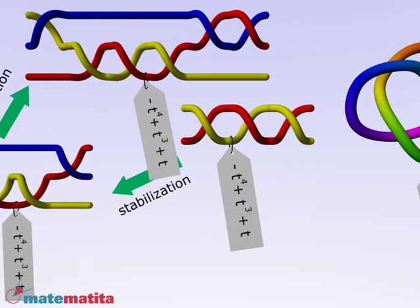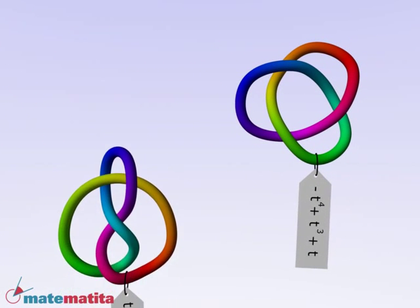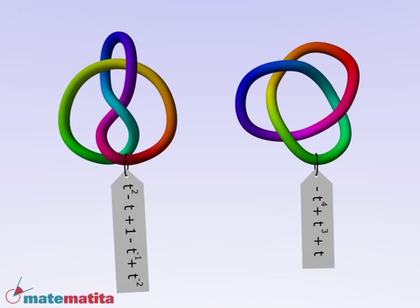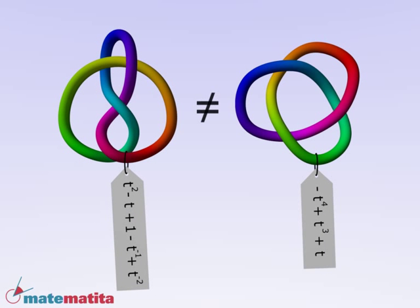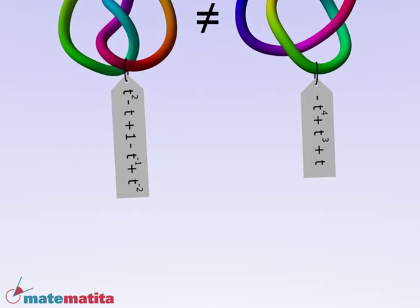This means that the formula, called Jones polynomial, only depends on the knot, and not on the braid used to get it. As an example, the trefoil and the figure 8 knot have different Jones polynomials, so they are surely different knots.